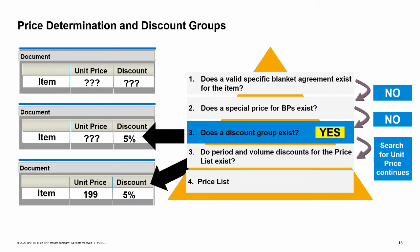A discount group contains discounts, but does not contain a price. When a discount group is found, the applicable discount or discounts will be entered, and the system will continue to look for a price in the price list assigned to the customer.